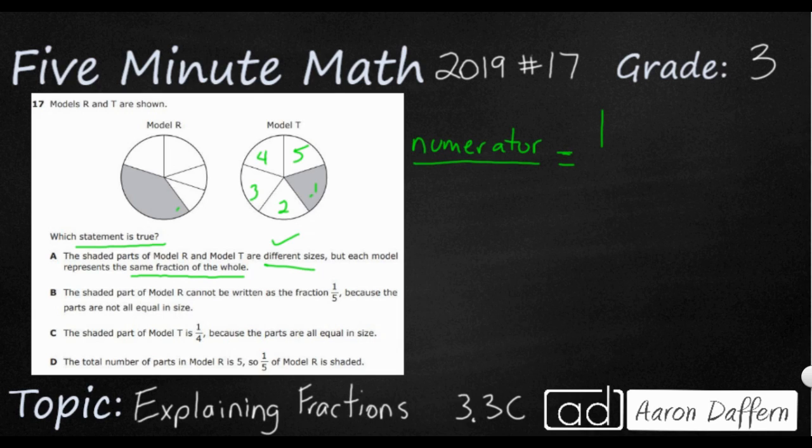And then the denominator is not the number of unshaded pieces, but the number of total pieces. That's your total altogether. We've got five. So this fraction is one out of five or one-fifth.